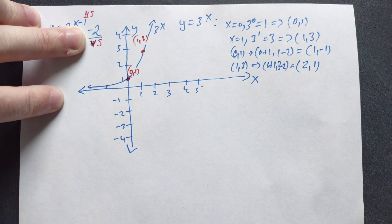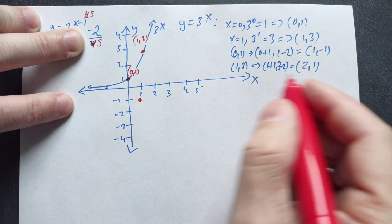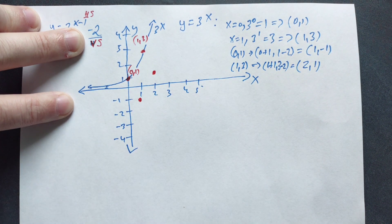Mark these new points in here. So 1 and negative 1 is about here. And then 2 comma 1 is about here.